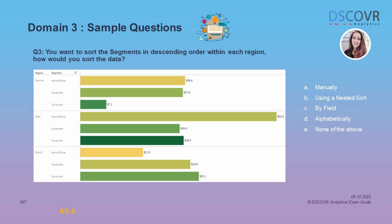This question tests your understanding of different types of sorts. You may be given a chart and asked what sort you would apply to sort data in ascending or descending order. In this case, we're sorting segments in descending order within each region, and the question asks what sort type you would use. The correct answer is B — a nested sort. Whenever you are sorting a dimension within another dimension, such as sorting segments within regions, you need a nested sort because it is the only sort that considers each pane independently.